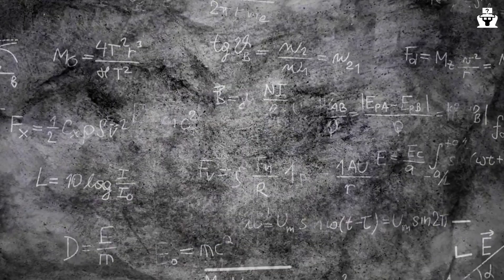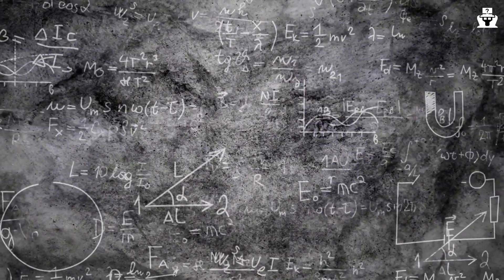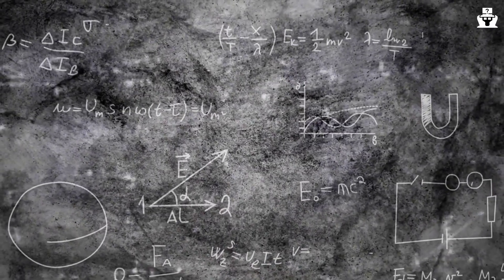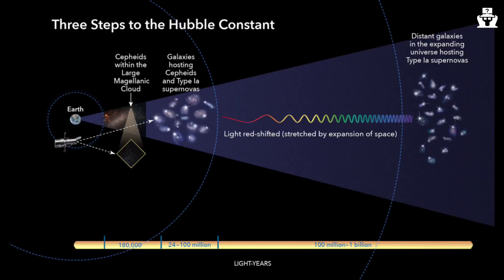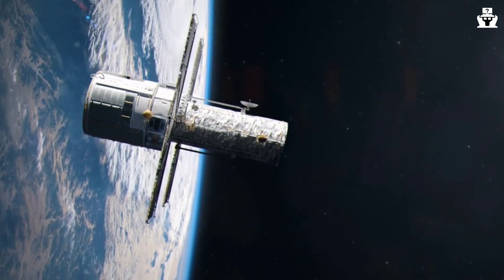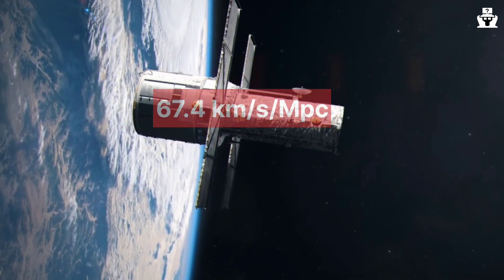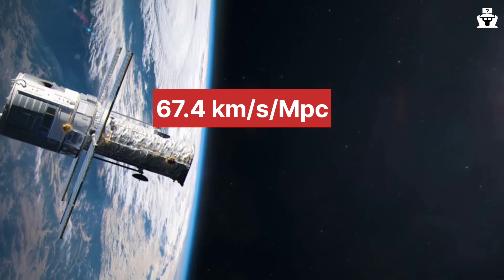Therefore, the expansion of the universe can occur faster than the speed of light. It is typically measured by a parameter called the Hubble constant. The Hubble constant represents the present-day expansion rate of the universe. The most recent measurements, including data from the Planck satellite and other cosmological surveys, suggest a value for the Hubble constant of around 67.4 kilometers per second per megaparsec.